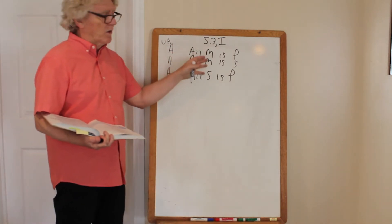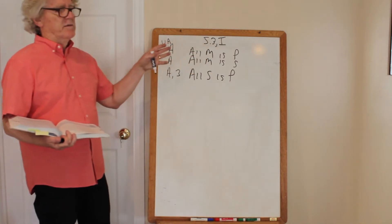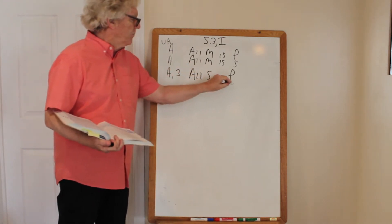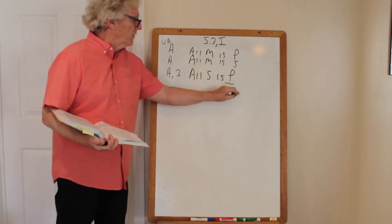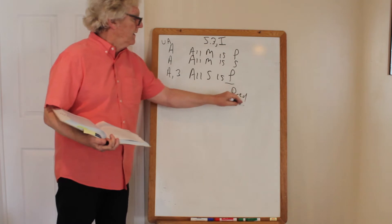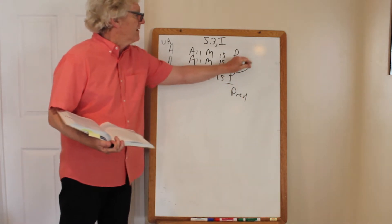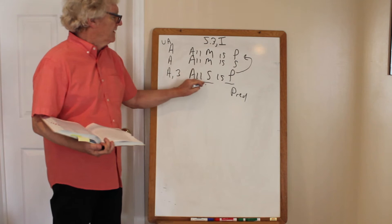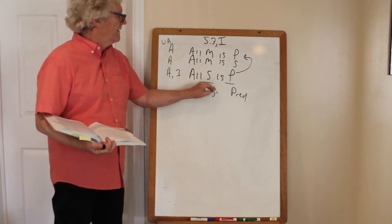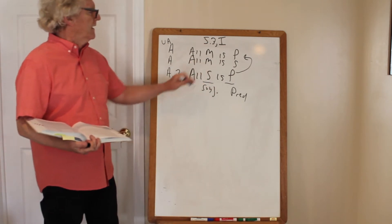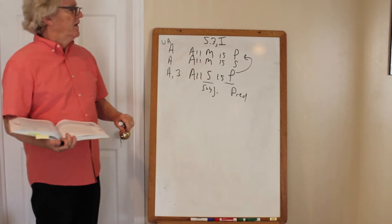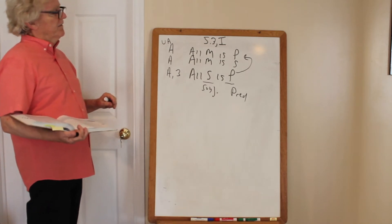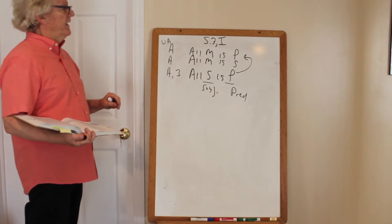The middle term shouldn't appear twice in one premise and zero times in the other. The P term should be the predicate of the conclusion and should occur in the major first premise. The S term is the subject of the conclusion and should be in the minor second premise.